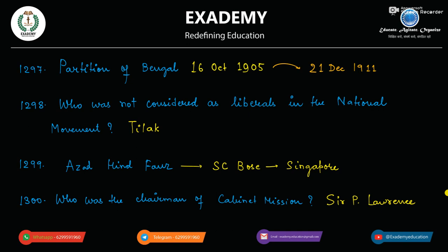Who was not considered a liberal in the national movement? Tilak. Tilak ko liberal nahi consider kiya jata tha — woh kaafi orthodox mind ke aadmi the.